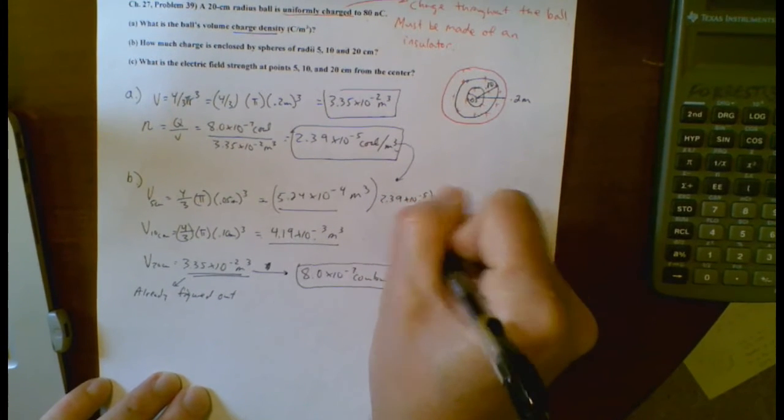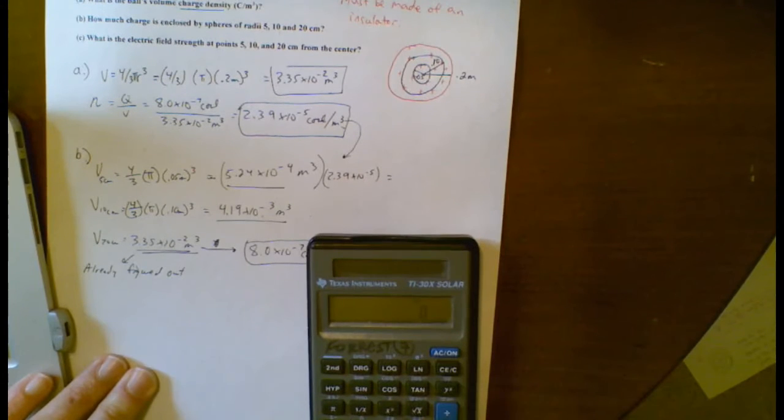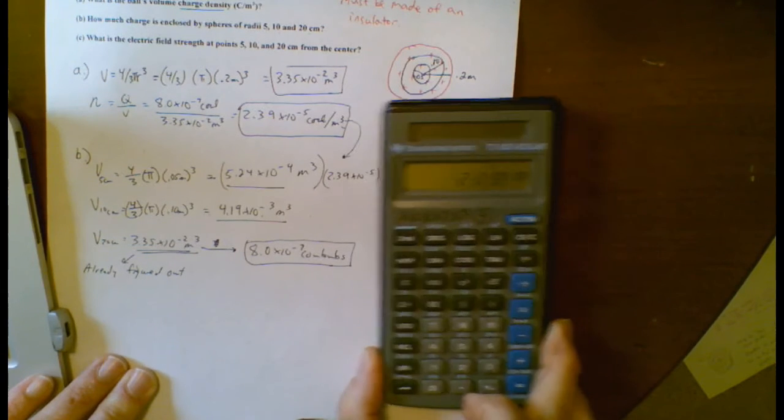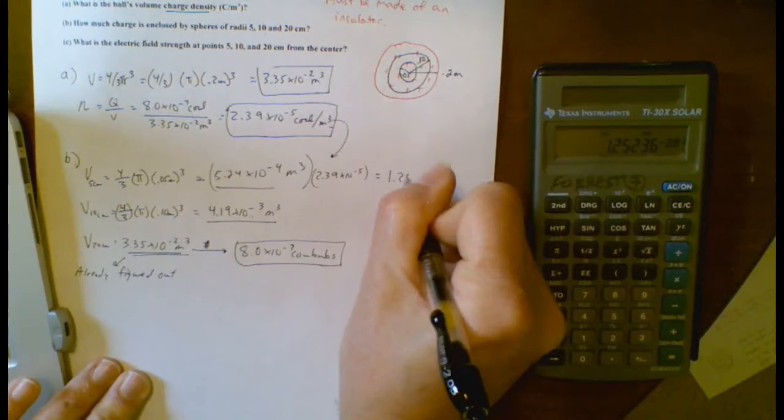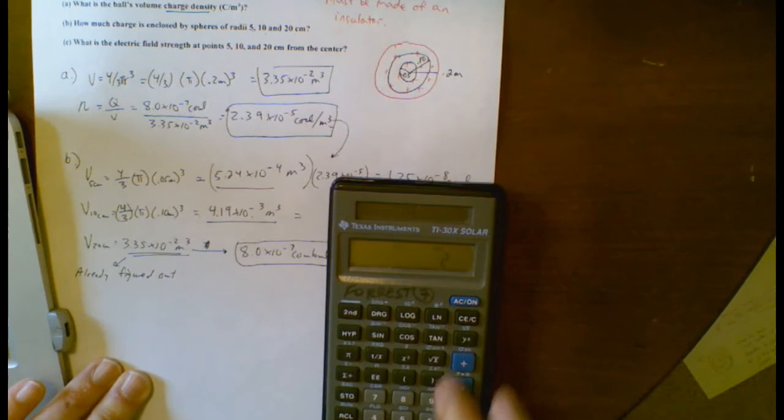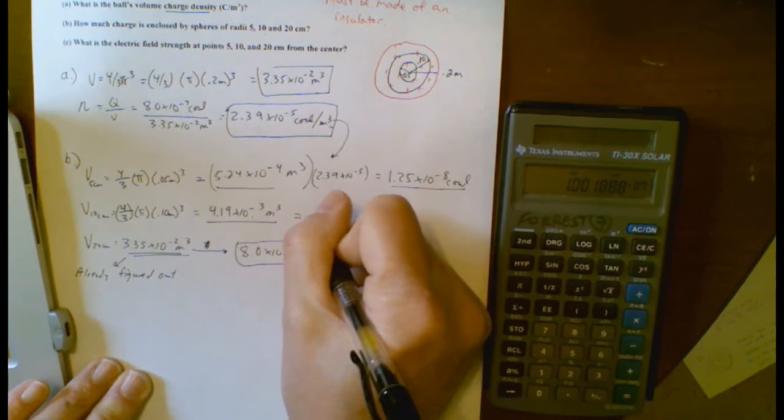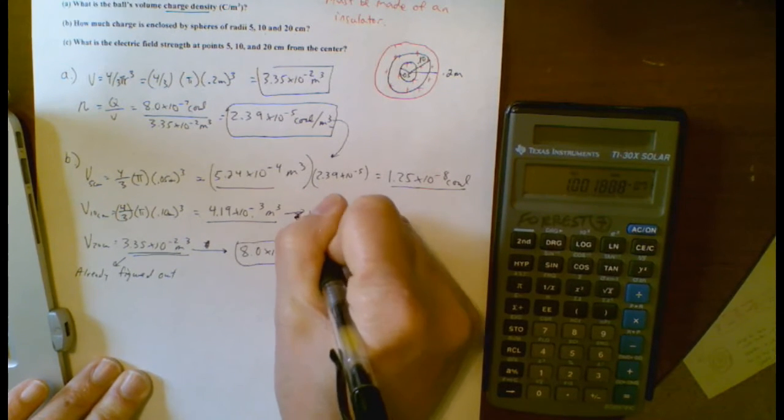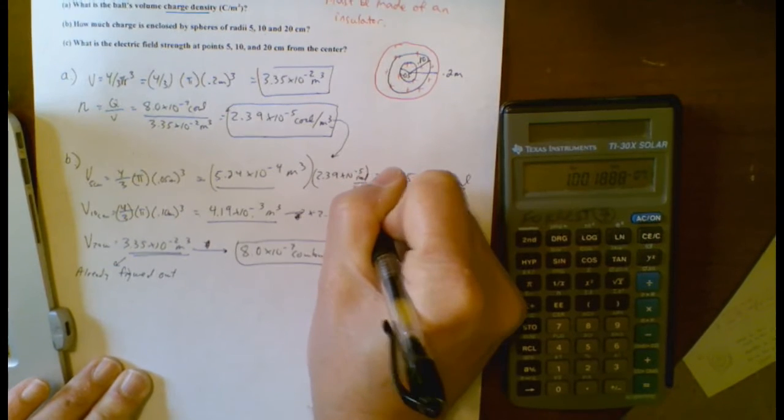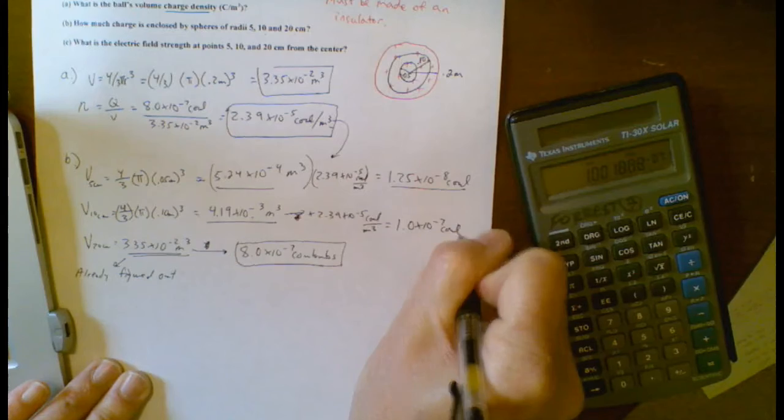But what I can do is take this volume, multiply it by this charge density as a double check. So 2.39 times 10 to the negative fifth times 5.24 times 10 to the negative fourth. That does give me 1.25 times 10 to the negative eighth, which is about what I said I would get. And this one, if I multiply that by 8, I get 1 times 10 to the negative seventh.